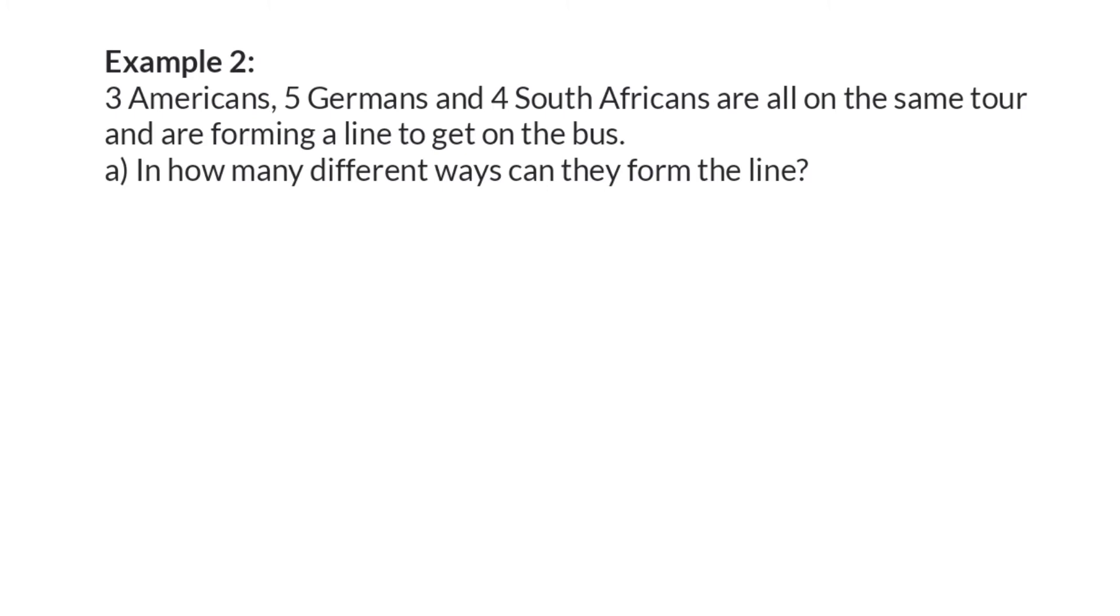We are given no extra requirements here so we can simply focus on the 12 people which will be 12 tasks that need to be completed. Therefore there are 12 factorial different ways which will be 479,001,600 different ways they can form the line.